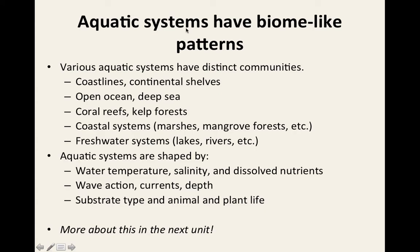We're also going to study aquatic systems in biomes. Characteristics that distinguish different aquatic communities include coastlines, open ocean areas, deep seas, coral reefs, kelp forests, marshes, mangroves, and freshwater systems like lakes and rivers. Key features include water temperature, salinity levels, dissolved nutrients, wave energy, currents, depth, and plant and animal life.